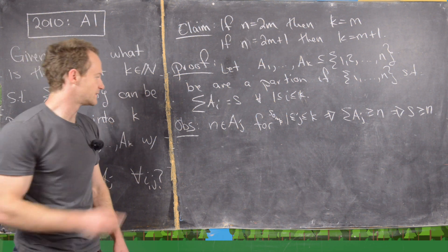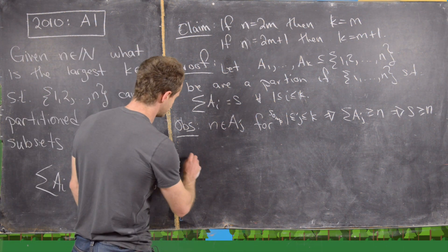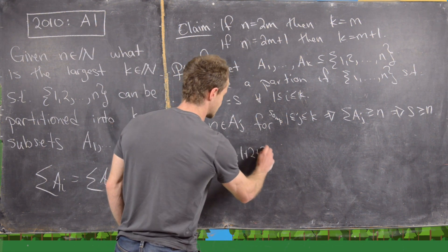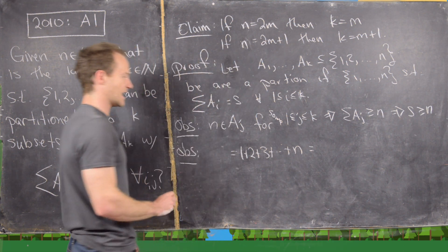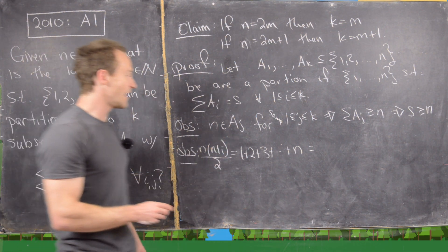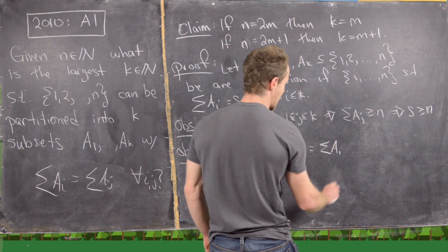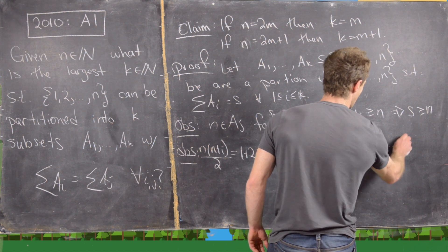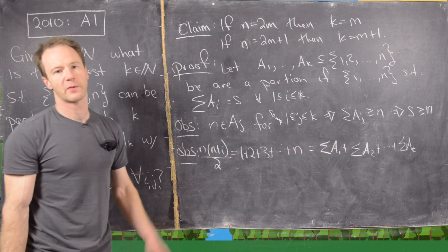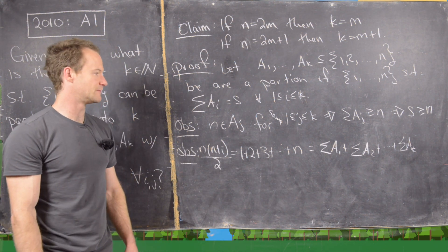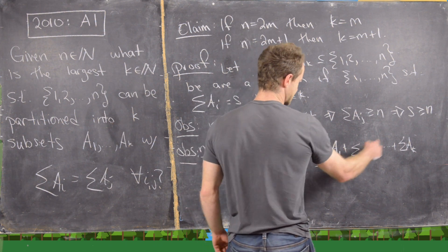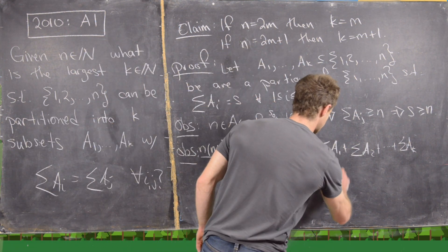Another key observation: if we sum all elements from 1 to N, that equals the triangular number N(N+1)/2 by a well-known formula. On the other hand, since the subsets form a partition, that total also equals the sum of elements in A1 plus A2, all the way through AK. Since each subset sum equals S, this is just S times K. So N(N+1)/2 equals S·K.